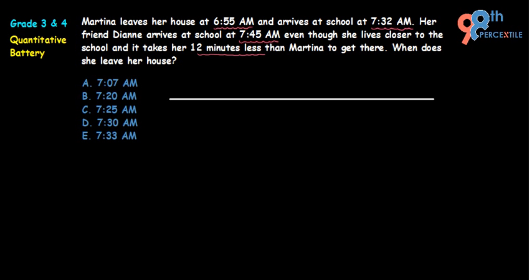The first piece of information is that Martina leaves her house at 6:55 AM — that's our starting point. She arrives at school at 7:32 AM. To make calculation easier, we mark 7:00 AM as an intermediate point on the timeline.